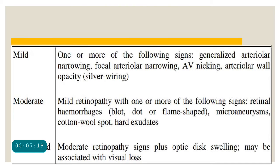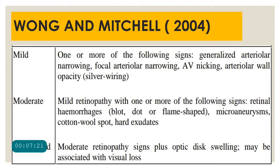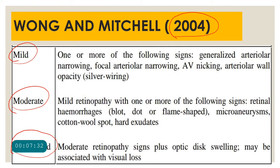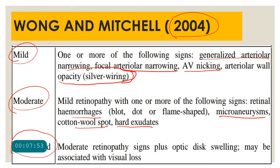This was modified by Wong and Mitchell, giving the fourth classification of hypertensive retinopathy in 2004. It uses only three categories: mild, moderate, and severe or accelerated. Mild hypertensive retinopathy includes generalized arterial narrowing, focal arterial narrowing, AV nicking, and arterial wall opacity such as silver wiring. Moderate includes hemorrhages, hard exudates, cotton wool spots, and microaneurysms. Severe includes optic disc swelling.